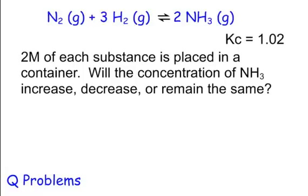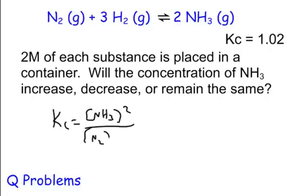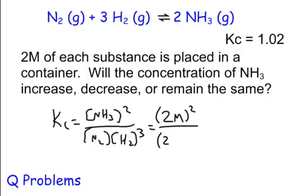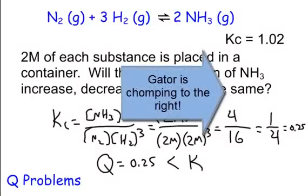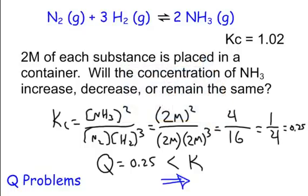Let's go to Q problems. Q stands for quotient. Using the equilibrium expression — NH3 squared over N2 times H2 cubed — we plug in the given values: 2 molar on top, 2 molar and 2 molar cubed on the bottom. That gives us 4 on top and 16 on the bottom, so Q equals 0.25. Since Q is less than K, we're going to have to shift to the right to compensate, making more NH3 to give a bigger number. Once Q equals K, we are at equilibrium.